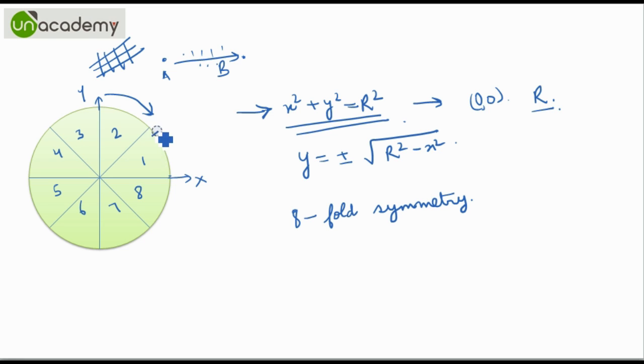All the points here can be reflected here. All the points here can be reflected here. And all the points here can be easily reflected here. And this way the circle has eightfold symmetry.